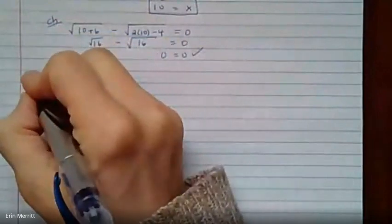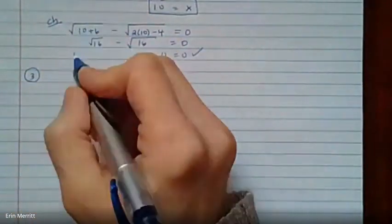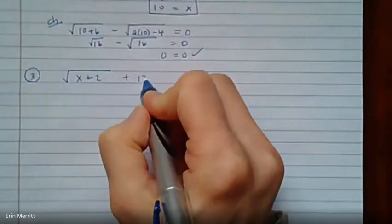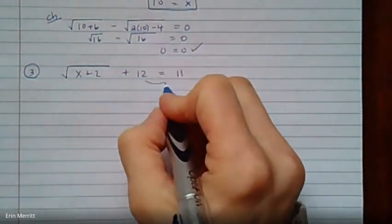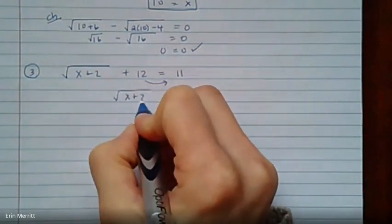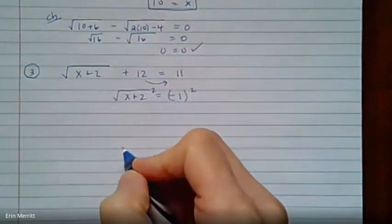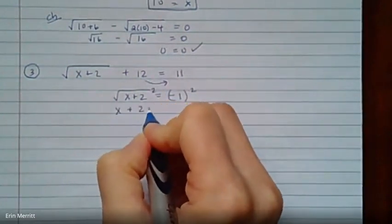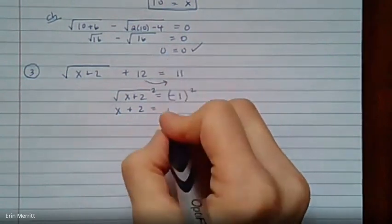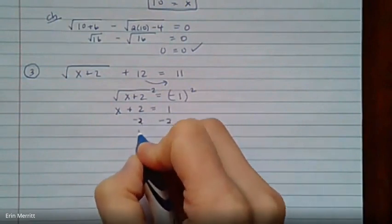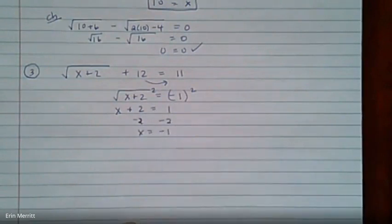Number 3. You know it's going to get a little different with this next one. So we have square root of x plus 2 plus 12 equals 11. Radical alone. Step number 1. Move that 12 on over. Step number 2. Square to get rid of the radical. That's going to give us x plus 2 on the left. Remember, when you square a negative, it becomes positive. That gives us a 1 on the right. Subtract to solve. We get negative 1.